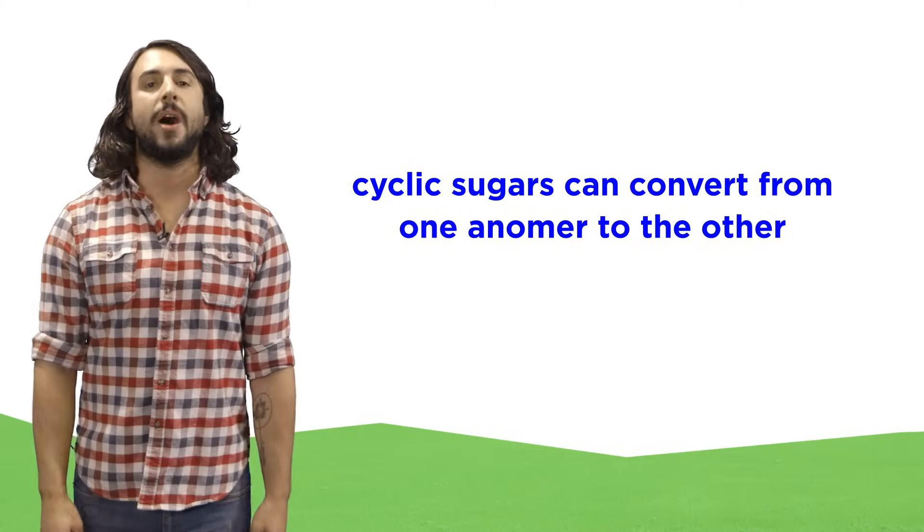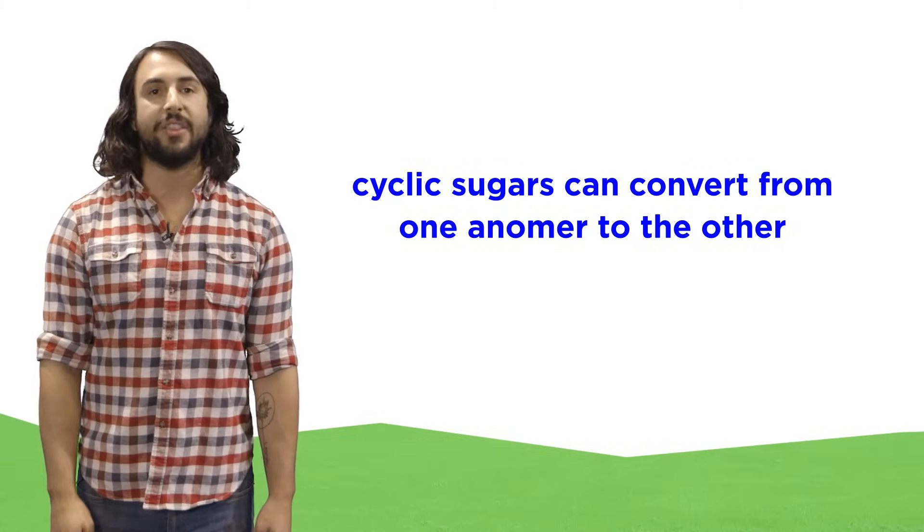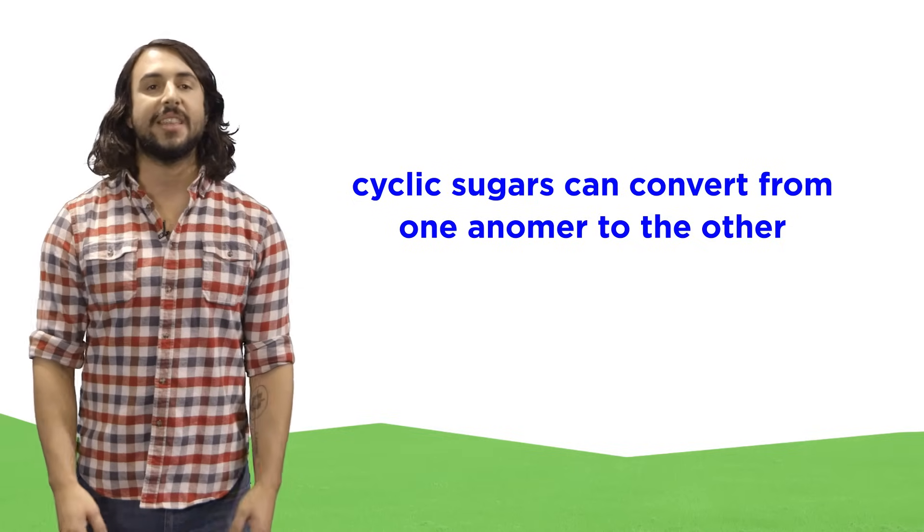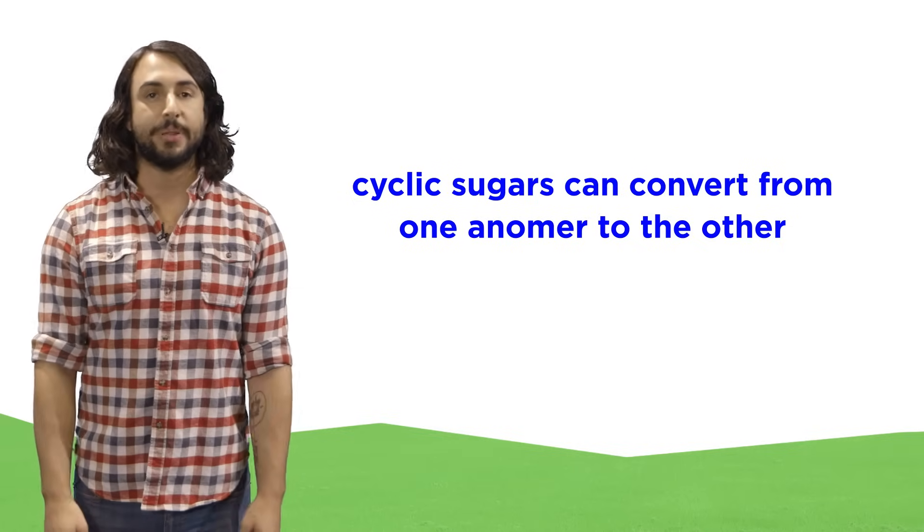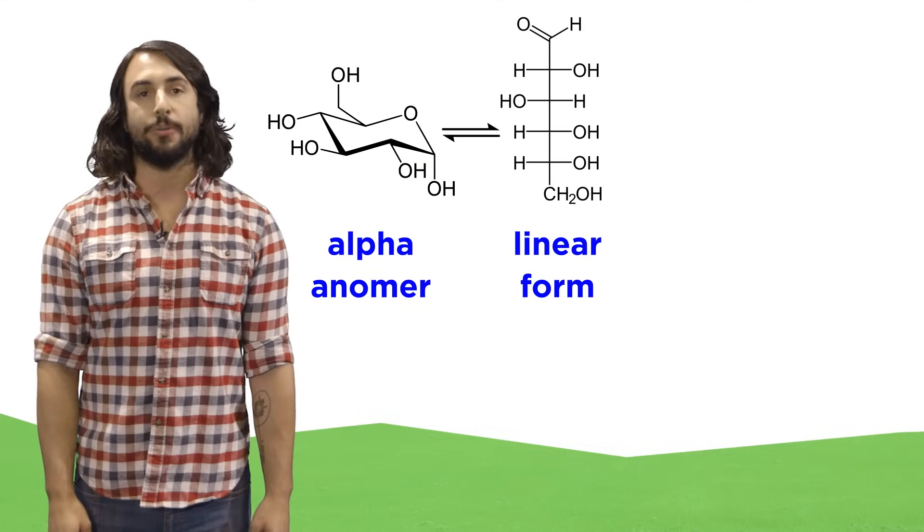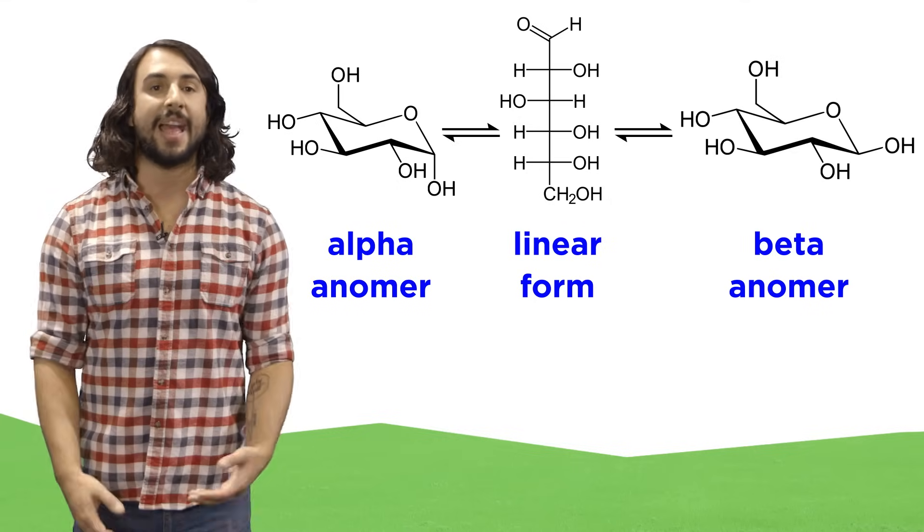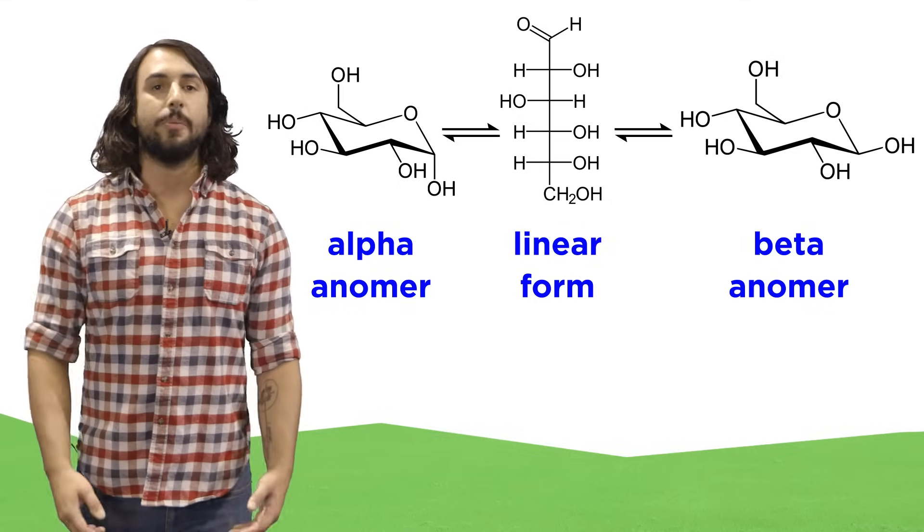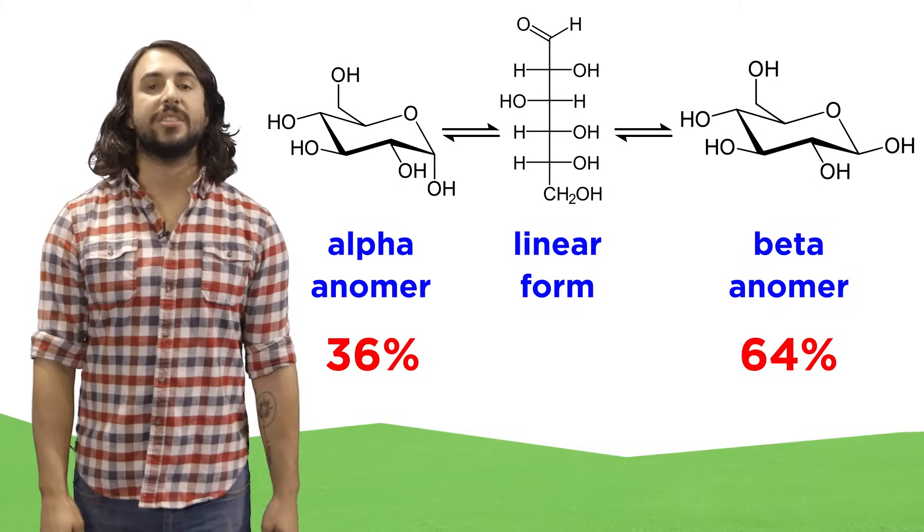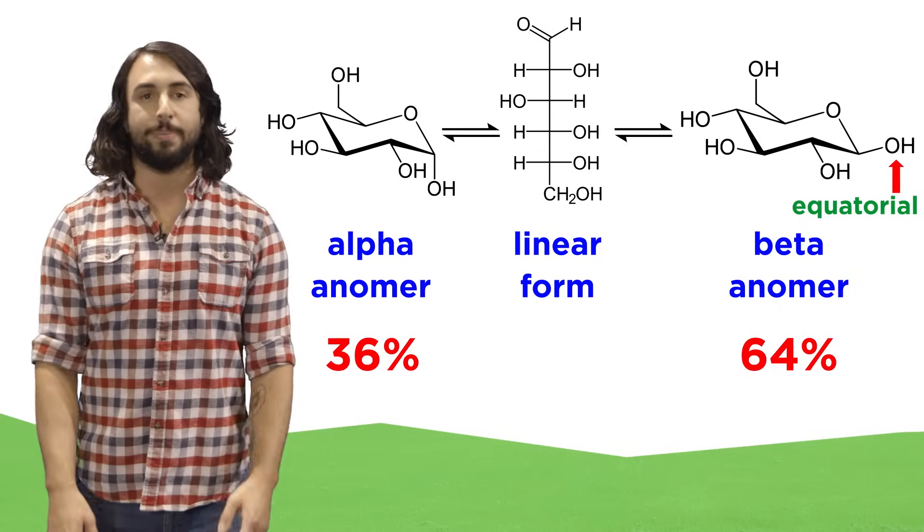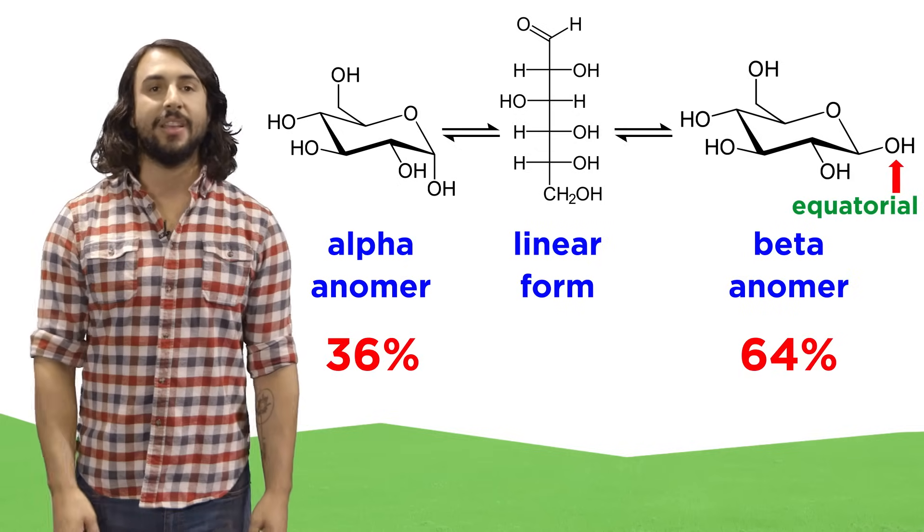We should also note that monosaccharides don't always remain in the alpha or beta form. We can have an equilibrium between them, since the hemiacetal formation is completely reversible. This alpha glucose might go back to the linear form and then cyclize again to form the beta anomer. In fact, for glucose, the beta anomer is preferred because the hydroxyl on the anomeric carbon will be in the equatorial position versus axial in the alpha anomer.